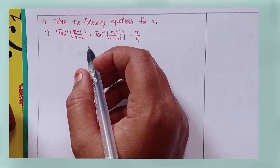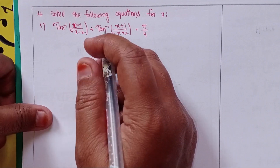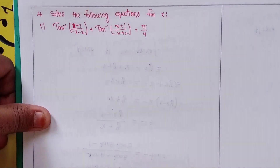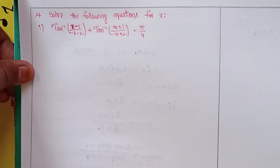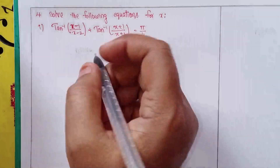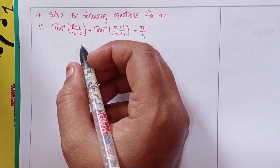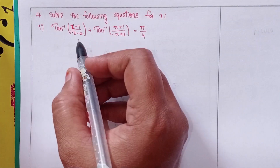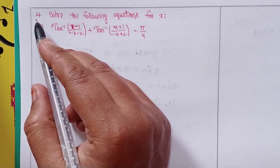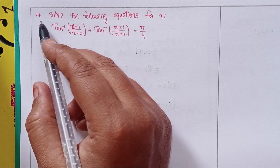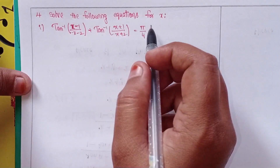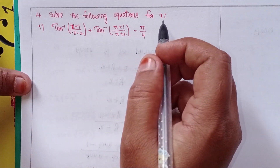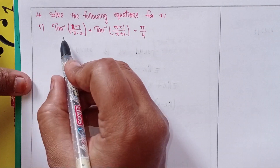Hi viewers, this is Shahin and welcome to my channel. Today we will discuss Intermediate First Year, Chapter 8, Inverse Trigonometric Functions, Exercise 8A, third roman, fourth problem — solve the following equations for x.